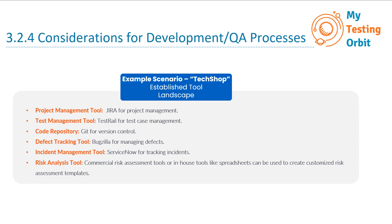The TAA seamlessly integrates with these tools. For example, if a critical defect is identified during automated testing, the TAA creates a bug report in Bugzilla automatically. This streamlines the defect resolution process as developers can immediately access the information they need to address the issue. Additionally, all test scripts are stored and versioned alongside the website's source code in Git, ensuring that any changes made to the code or tests are well documented and traceable.